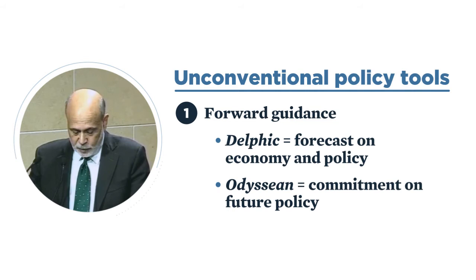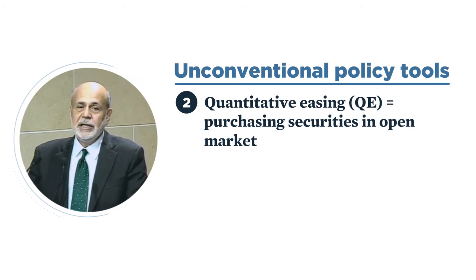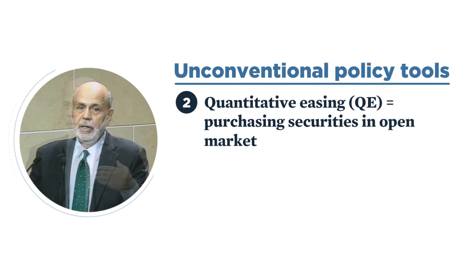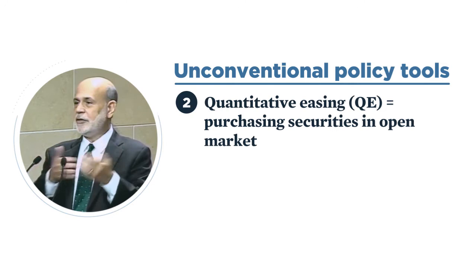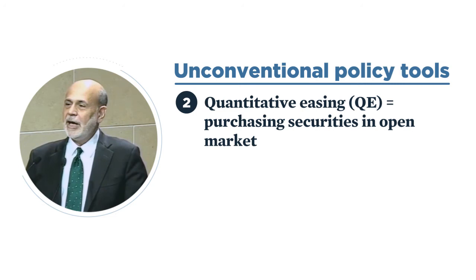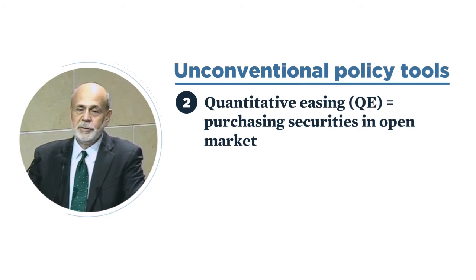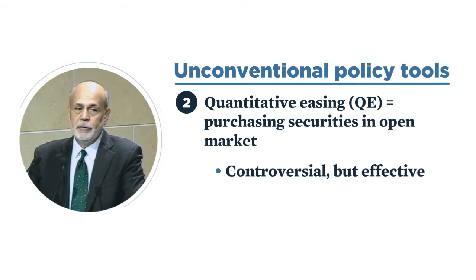In the future, forward guidance will be used quite regularly and effectively as we learn better how to commit to future policy actions. Quantitative easing also has this forward commitment element to it. Many theorists have argued that QE is just basically an asset swap and won't really change the set of opportunities that investors have. But Joe Gagnon here at Peterson did a survey, and I think there's very strong evidence that QE is effective — it works both through the signaling and through the portfolio balance effects.